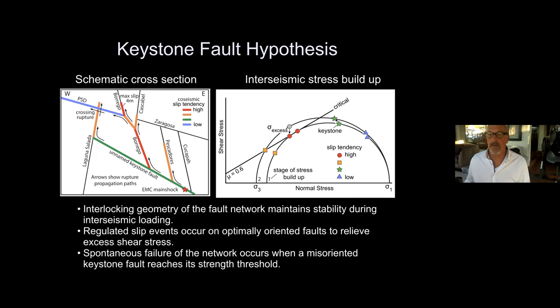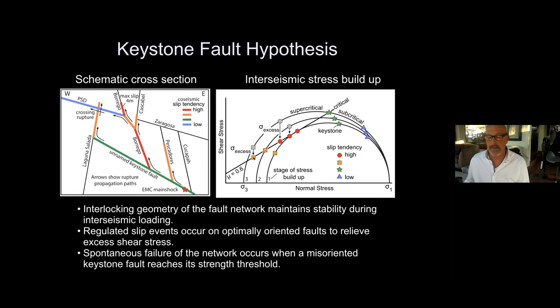Any fault that controls and regulates slip on a more optimally oriented fault is called a keystone fault. Other less optimally oriented faults reach criticality and undergo the same process as regional stress increases. Finally, the keystone fault that is stabilizing the entire network reaches critical stress, and when it fails there's nothing holding it back — it fails together with other faults in the network, because those faults had been maintained at critical stress throughout the late stages of the interseismic cycle. This, my friends, is the Keystone Fault Hypothesis.